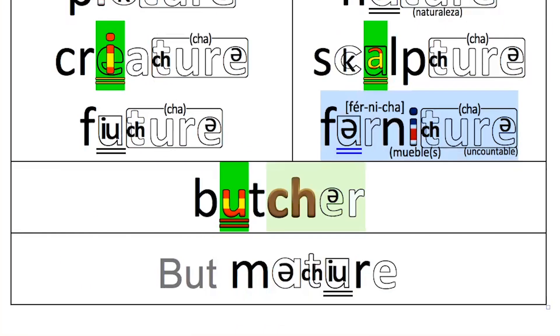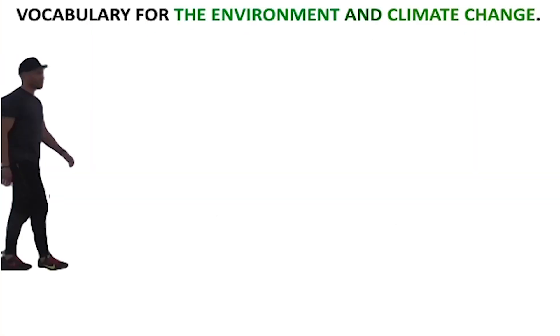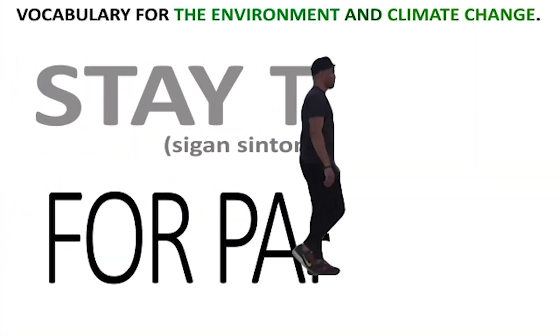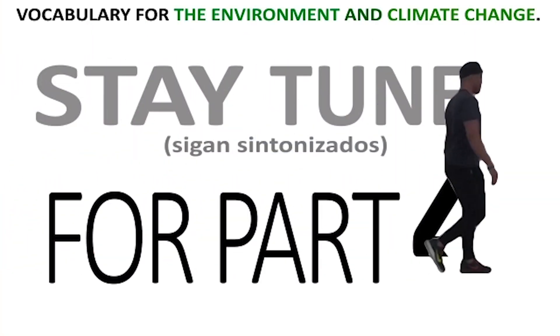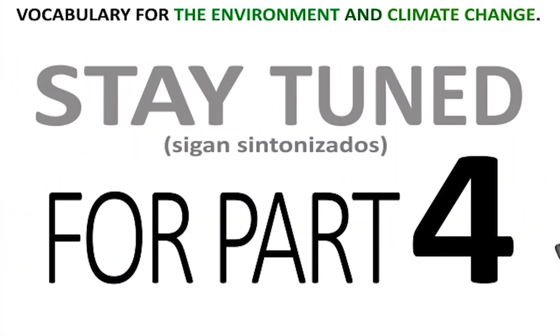There are some exceptions. Butcher — but this is not -TURE. But this one is: mature. That's the end of part three. Please like and subscribe and stay tuned for part four.